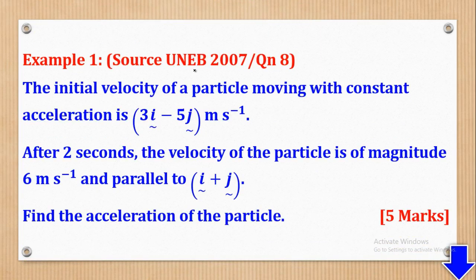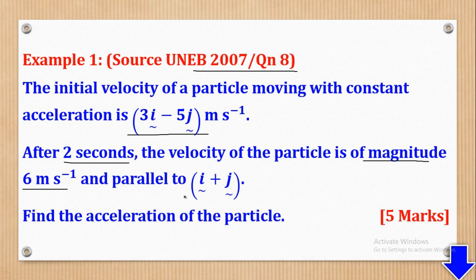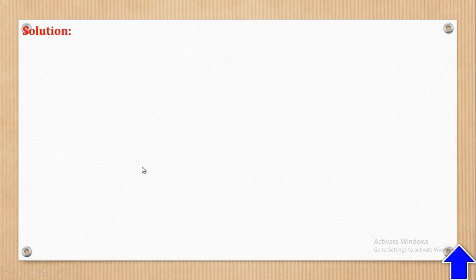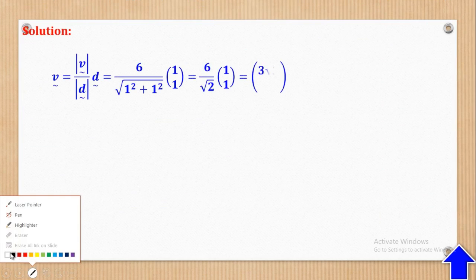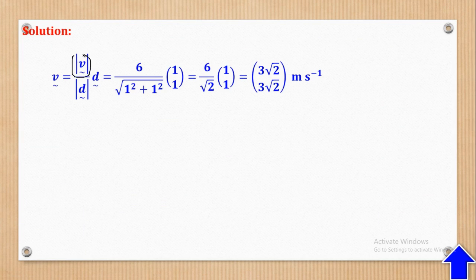We shall go to Example 1, which came from UNEB 2007, paper 2, question 8. It says: the initial velocity of a particle moving with constant acceleration is 3i − 5j meters per second. After 2 seconds, the velocity of the particle is of magnitude 6 meters per second and parallel to i + j. This is the magnitude of the velocity, and this is the direction vector. They want us to find the acceleration. Since we know magnitude and direction, the first thing to do is convert from magnitude to vector.